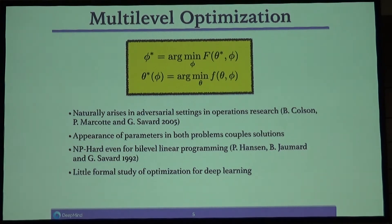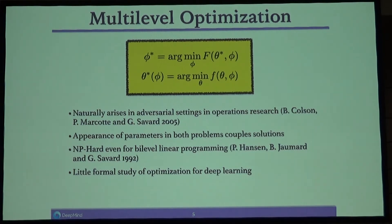Even when each of these optimization problems individually is easy to solve — like a linear program — when you couple them together, this immediately becomes NP-hard. So even in the simplest cases, this is a hard optimization problem.